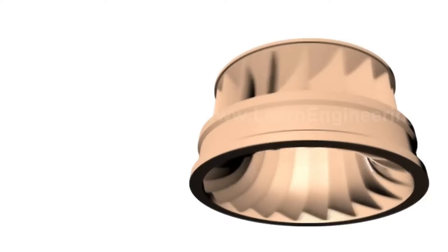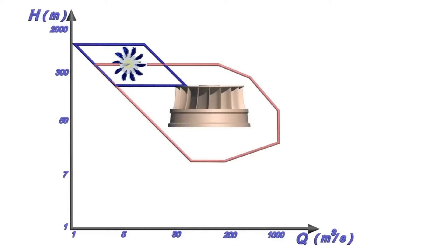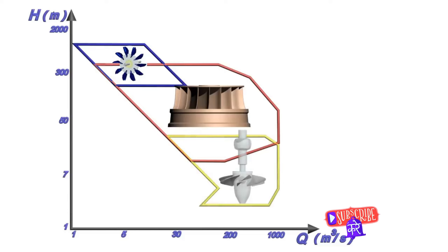Lastly, we have the Kaplan turbine, another type of reaction turbine. Invented by Austrian engineer Victor Kaplan, it operates similarly to the Francis turbine, but with adjustable blades that allow it to maintain high efficiency at varying flow rates.